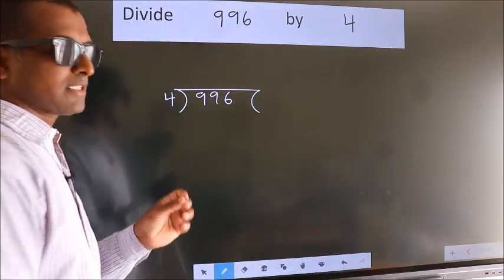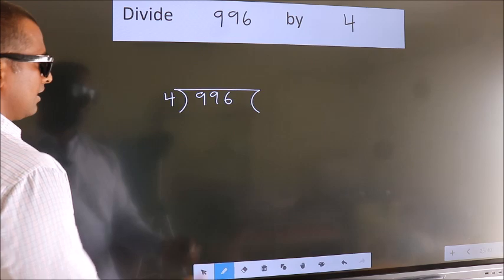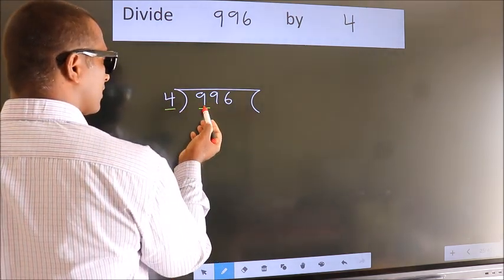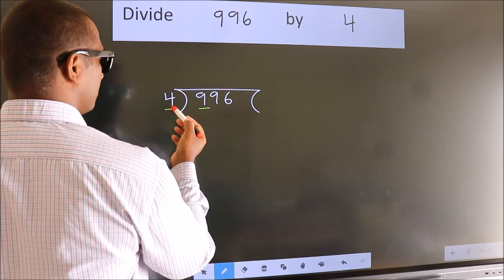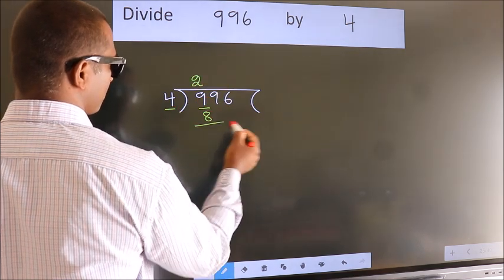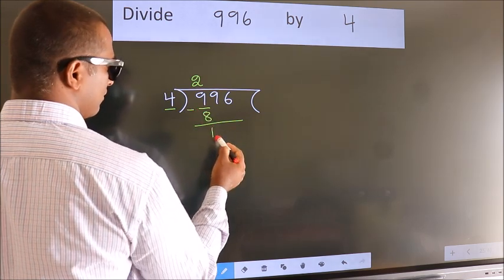This is your step 1. Next. Here we have 9, here 4. A number close to 9 in 4 table is 4 twos, 8. Now we should subtract. We get 1.